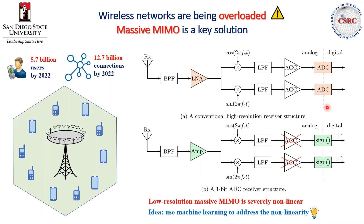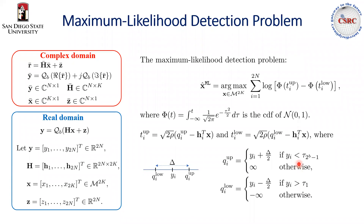And here the idea is to use machine learning to address the non-linearity, because machine learning is well known for its ability of addressing non-linear problems. Now let's consider the maximum likelihood detection problem. The maximum likelihood detection method is used to recover the transmitted signal X, given the channel matrix H and the received signal Y.